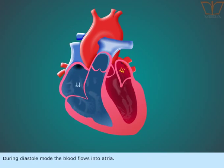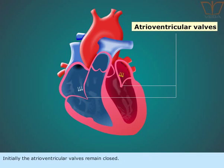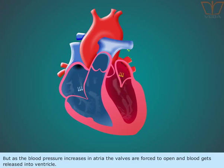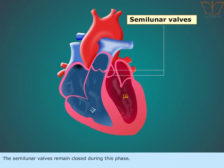During diastole mode, the blood flows into the atria. Initially, the atrioventricular walls remain closed. But as the blood pressure increases in the atria, the walls are forced to open and blood gets released into the ventricle. The semilunar walls remain closed during this phase.